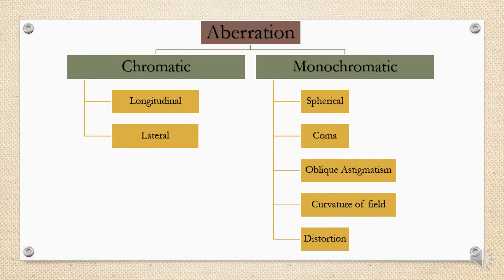First, we need to understand aberrations and their types. Any particular attribute leading to the deterioration of the image is called an aberration. It is broadly classified into two types: chromatic and monochromatic aberrations. In chromatic aberration, each lens has a different refractive index or bending ability for different wavelengths. Red light has a faster speed compared to blue light because of its physical properties. Lateral chromatic aberration is basically the prismatic effect which leads to different angular dispersion of light.